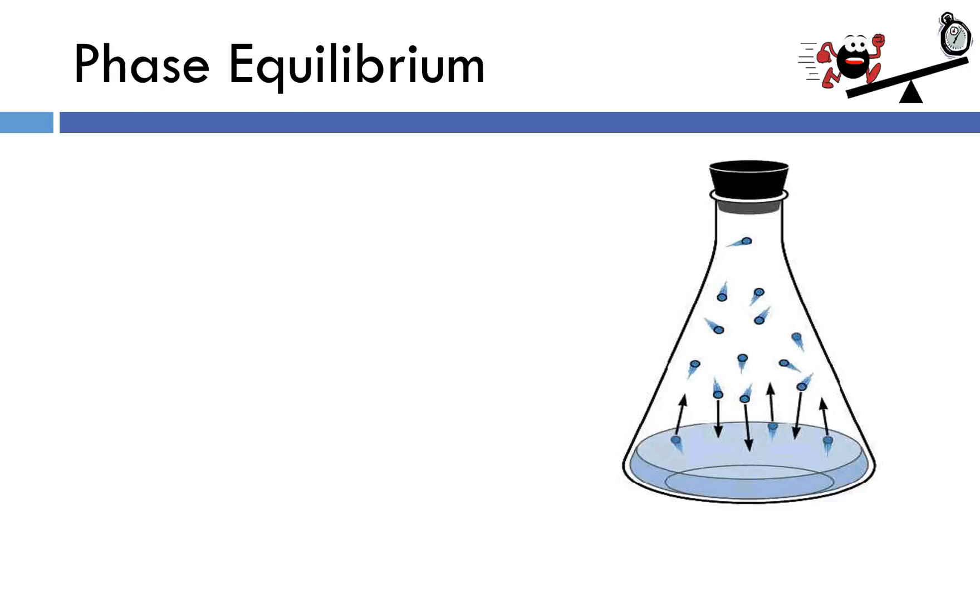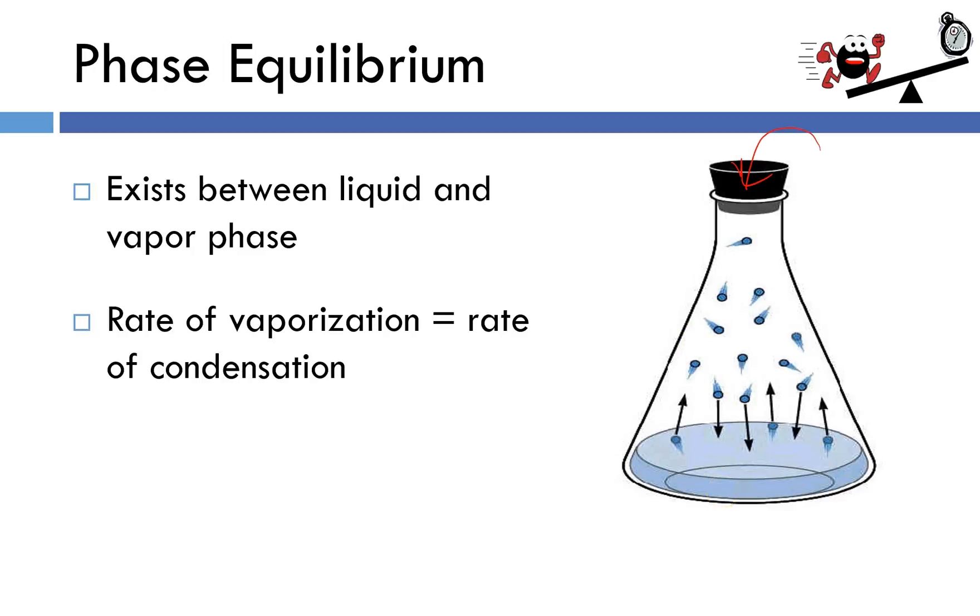Let's look at a couple different equilibrium systems. This is one that we should be familiar with. Phase equilibrium exists between the liquid and vapor phases. So we've got, in this case, an Erlenmeyer flask with some liquid in it. We've stoppered it closed. Key to an equilibrium system, it has to be a closed system. And in this case, we'll have some of the liquid molecules evaporating and forming a vapor. And some of the vapor molecules are going to condense and become liquid. Once equilibrium has been established, that means that the rate of vaporization or evaporation is equal to the rate of condensation.